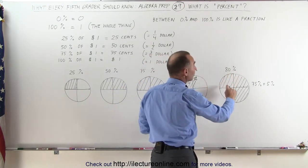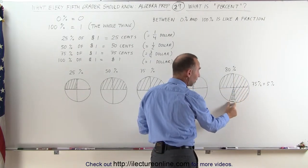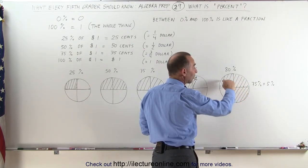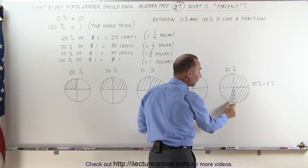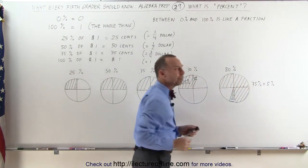80% means I have 75% plus 5%. So these three quarters add up to 75%. This sliver here adds up to another 5%. So I have a total of 80%.